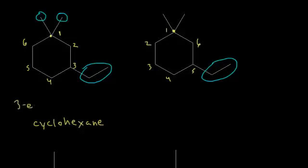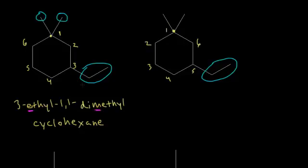Applying the alphabet rule, ethyl comes before methyl, giving 3-ethyl-1,1-dimethylcyclohexane as the official IUPAC name. Remember: prefixes don't count for alphabetizing — compare ethyl versus methyl, not di-methyl, so E still comes before M.